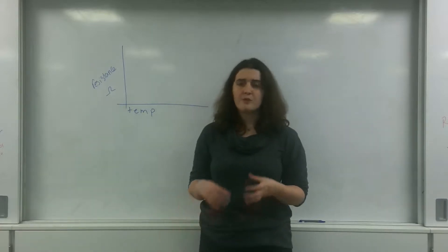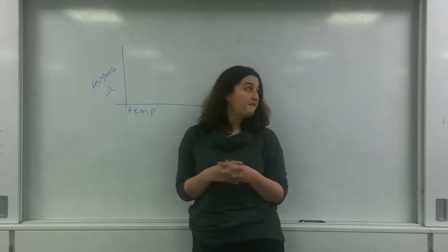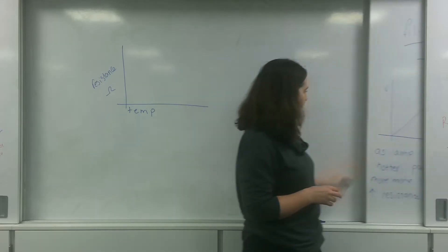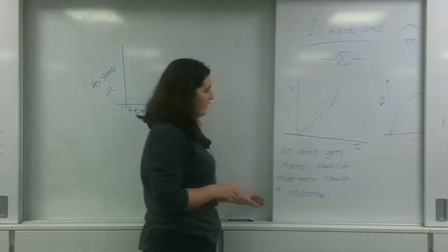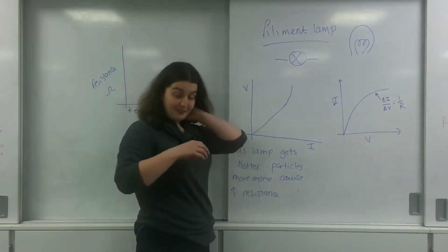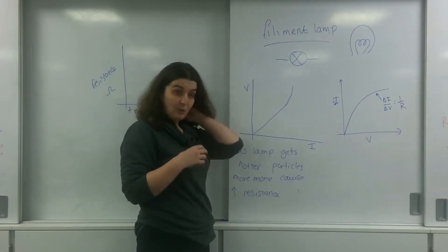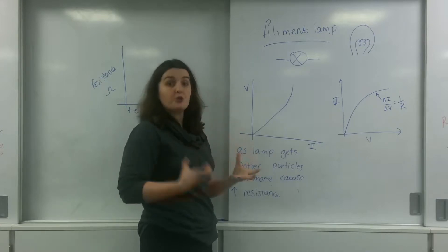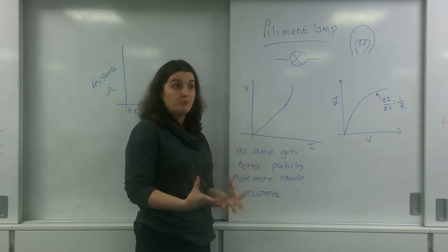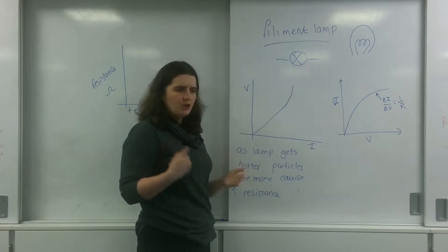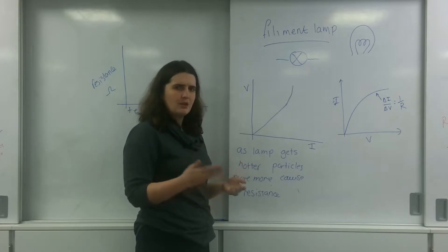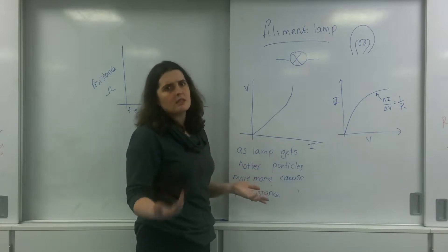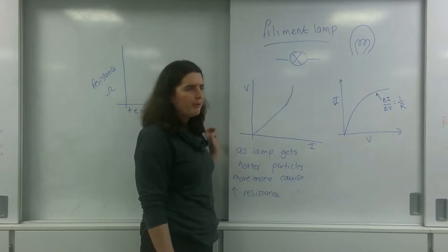We've spoken before about a filament lamp. As the filament lamp gets hotter, the particles start to move around more, and the charged particles — the electrons flowing through them — are more likely to hit them, so the resistance goes up.